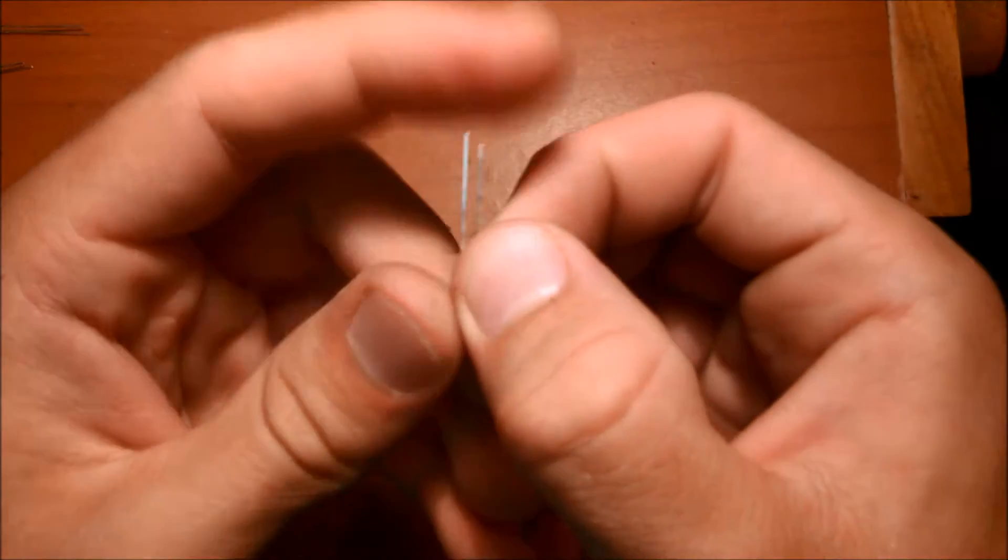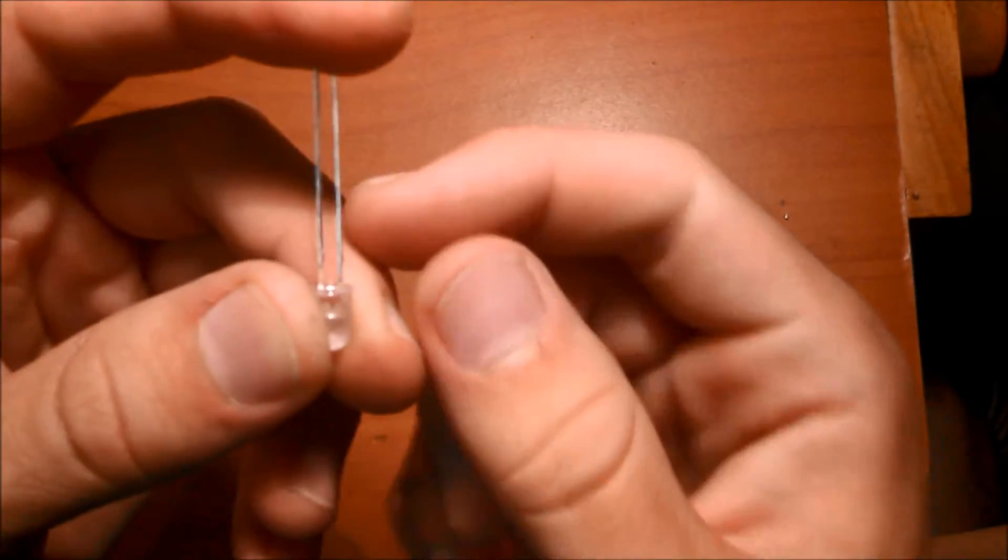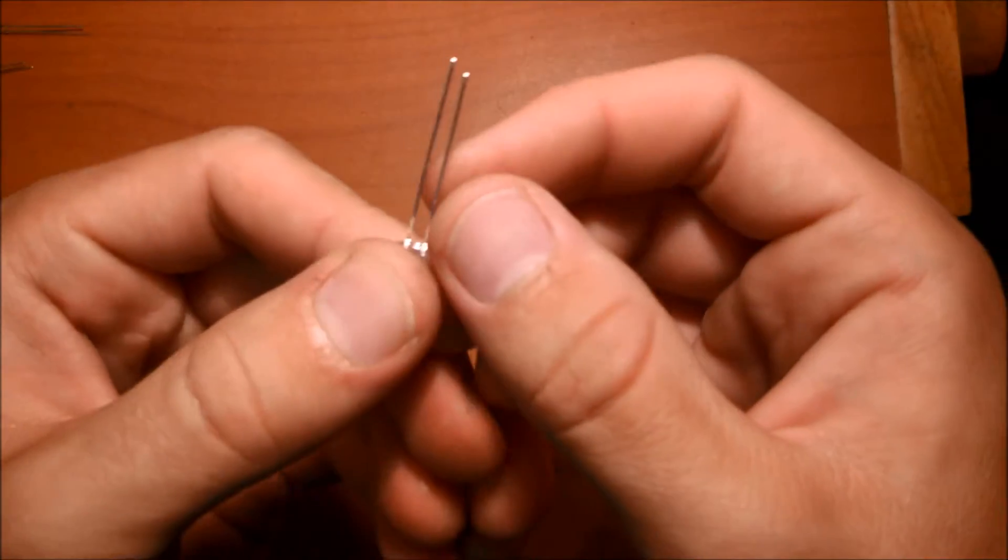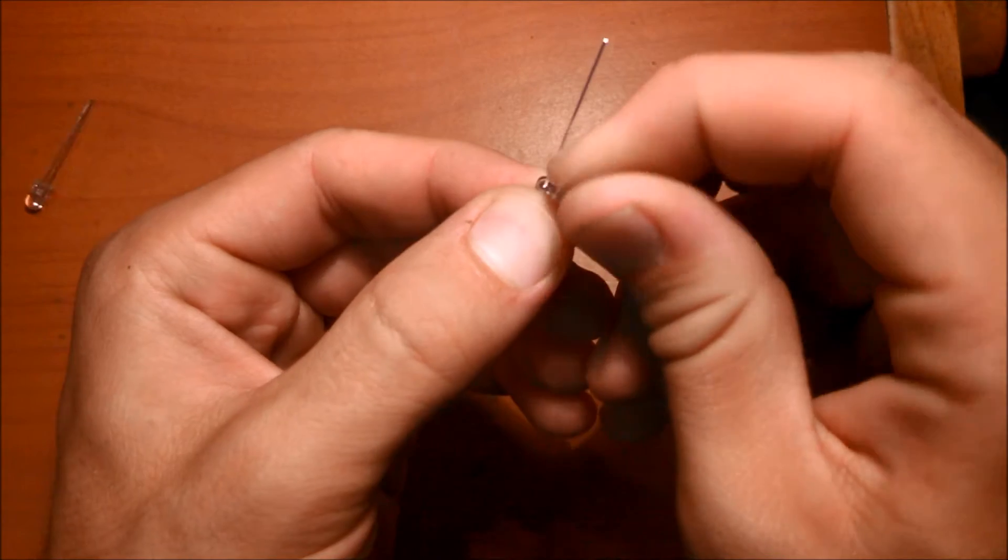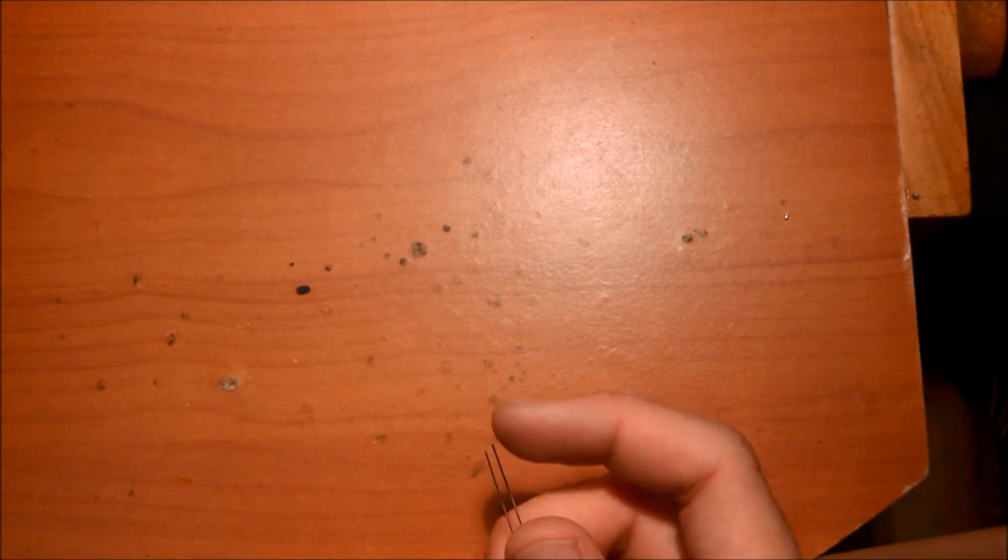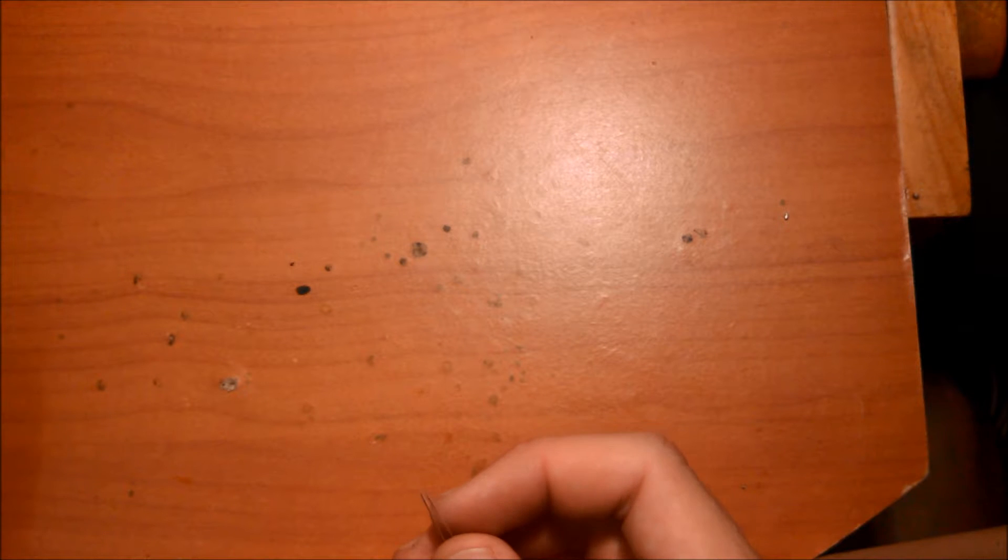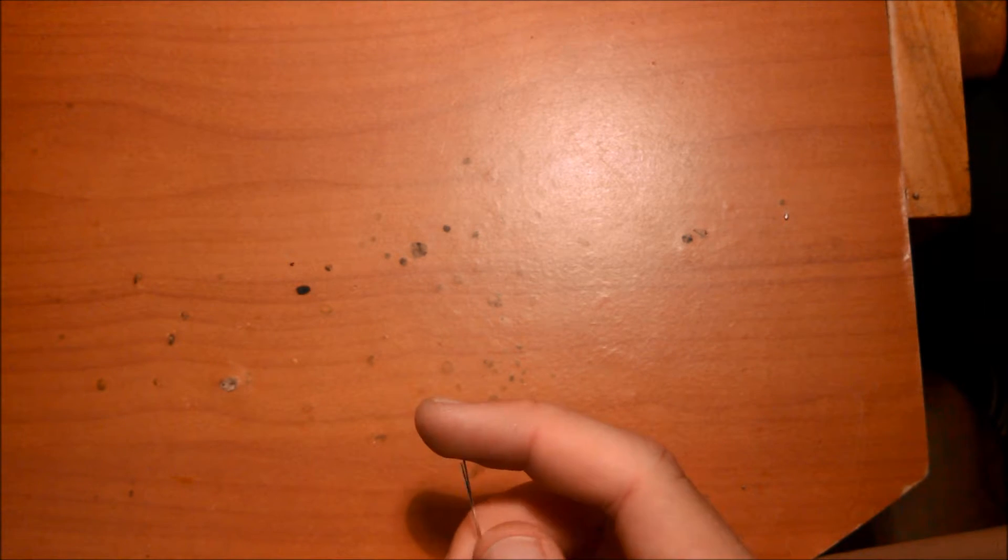Then take another LED with the short leg on the right and the long leg on the left, bend the short leg towards you like so. And keep doing that until you've bent either 400 or 300 LEDs depending on how many LEDs you want your Thomas display to have.